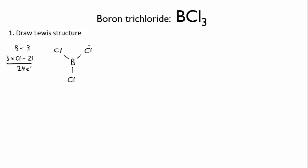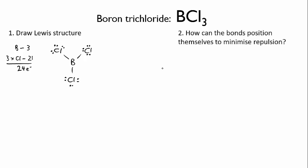Remember that boron is one of those funny atoms that can happily be electron deficient, so it doesn't have a full octet. So how can the bonds position themselves to minimize repulsion?